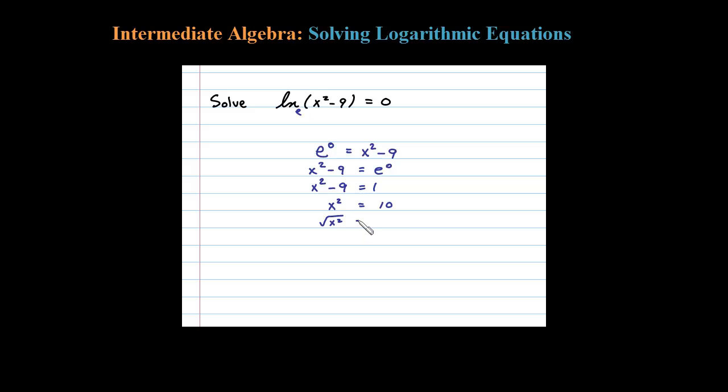At this point I'll just go ahead and extract the root, take the square root of both sides. Don't forget the plus or minus when you do that. That leaves us with x equals plus or minus square root of 10. So we've solved this for x.